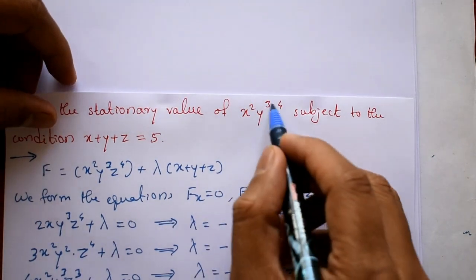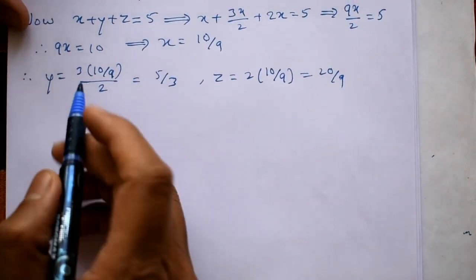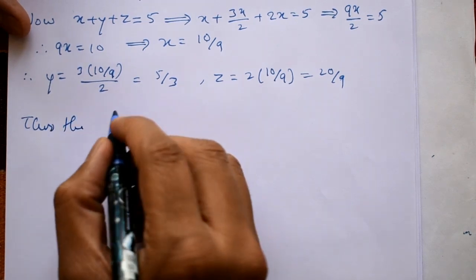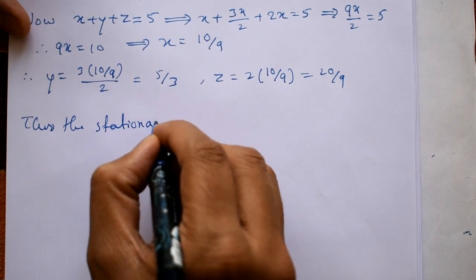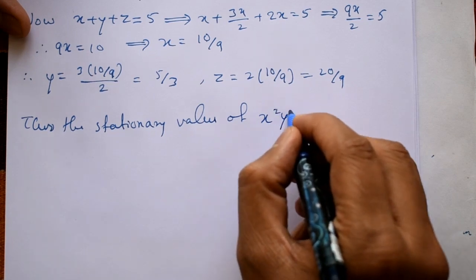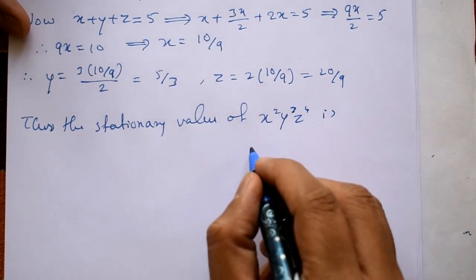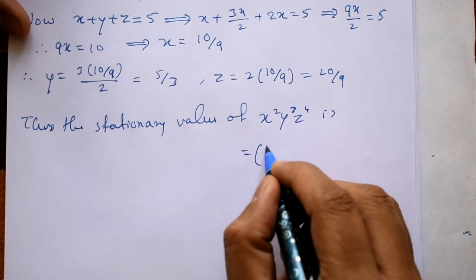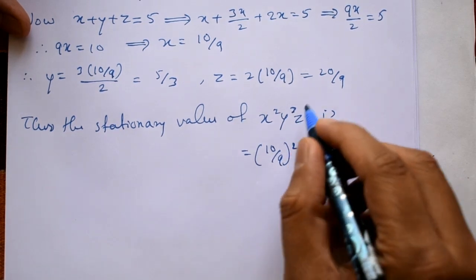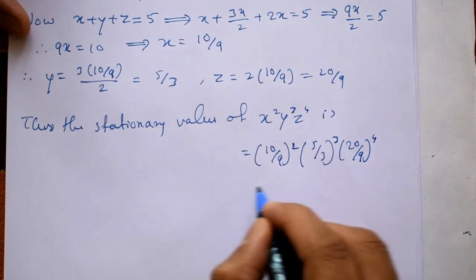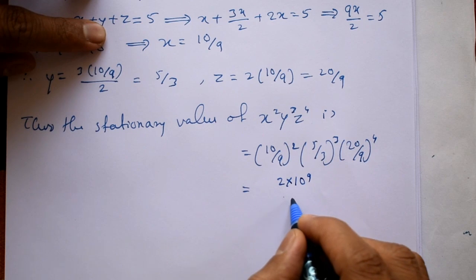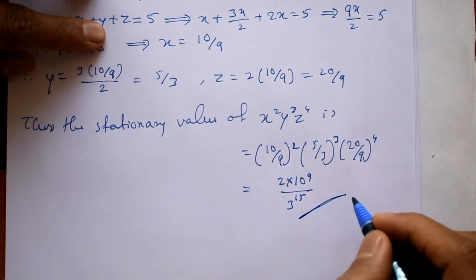Substituting x, y, z into the original expression to get the stationary value: x²y³z⁴ = (10/9)² times (5/3)³ times (20/9)⁴, which equals 2 times 10⁹ divided by 3 raised to 15. This is the required stationary value.